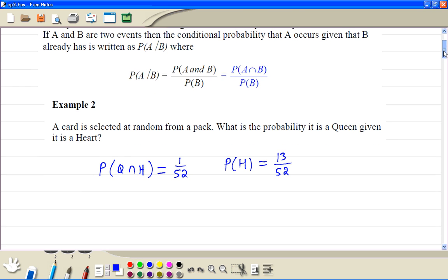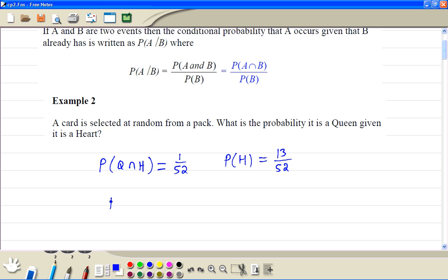Then we use our formula. The probability it's the queen given heart - we have the probability of queen and heart divided by probability of heart. So we have 1 over 52, then we divide by 13 over 52.